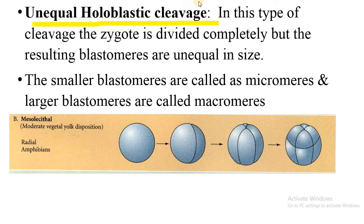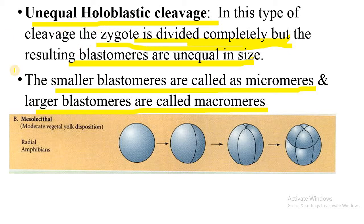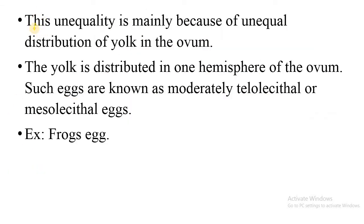In unequal holoblastic cleavage, the zygote is divided completely — the cleavage furrow penetrates the whole egg — but the resulting blastomeres are of unequal size. The smaller blastomeres are called micromeres and the larger ones are called macromeres. This inequality is mainly because of the unequal distribution of yolk in the ovum or zygote.